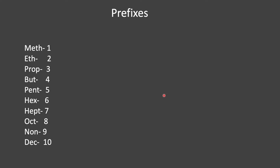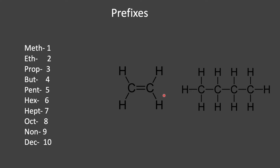So a little bit of a recap from the last video. We said that prefixes are essentially how we write the beginning of a name of an organic molecule. We have prefixes from one to ten. If you're learning the basics, this is probably as far as you'll go, up to ten. And these prefixes tell us how many carbons are in a molecule. So let's take this one for example — we have four carbons in this molecule.